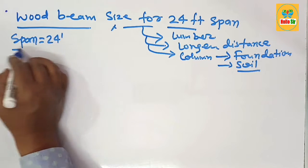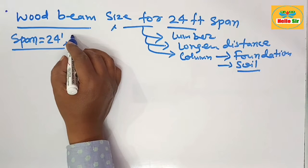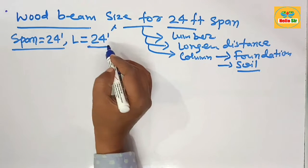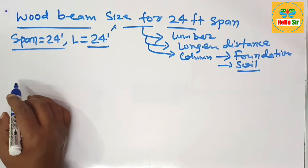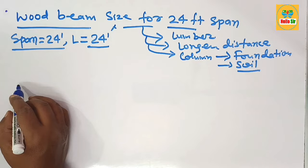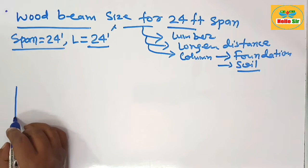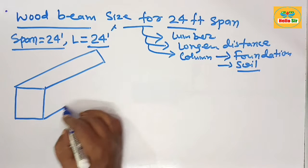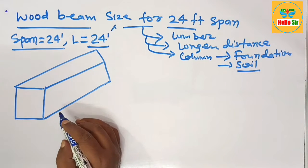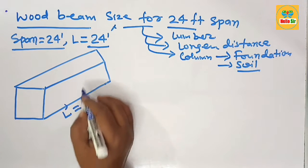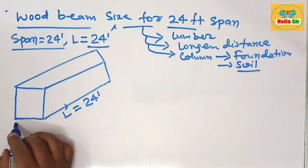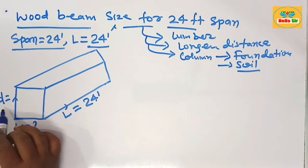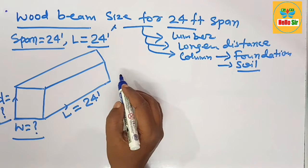The span length is 24 feet, meaning the required length of the beam equals the span — 24 feet. For the sizing of the wood beam, we need to find out the correct depth and width section. A rough three-dimensional diagram is drawn to illustrate the length, width, and depth sections: the length is 24 feet, and we need to calculate both the width and depth.